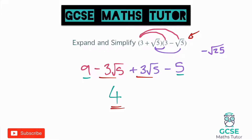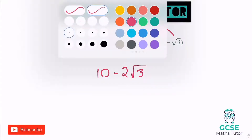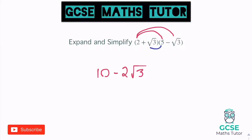On to our next question. So another double bracket, different to the one above — they're not the same brackets this time with different symbols. I'm going to follow the same process. 2 times 5 is 10. 2 times negative root 3 is negative 2 root 3. Root 3 times 5 is positive 5 root 3, because we've got a positive symbol in front of our root 3 — so plus 5 root 3.